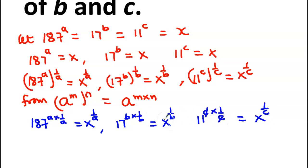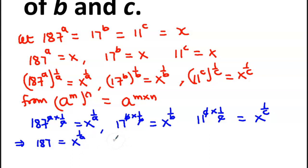After cancellation — C cancels C, B cancels B, A cancels A — so we are going to have 187 equal to X to the power 1 over A, then 17 equal to X to the power 1 over B, and 11 equal to X to the power 1 over C.